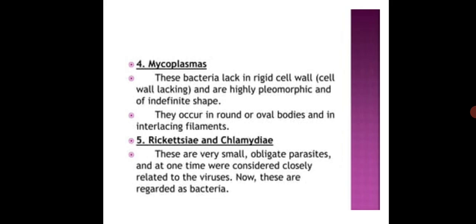Mycoplasmas: These bacteria lack rigid cell wall and are highly pleomorphic and of indefinite shape. They occur in round or oval bodies and in interlacing filaments. Rickettsiae and Chlamydiae: These are very small, obligate parasites and at one time were considered closely related to the viruses. Now these are regarded as bacteria.